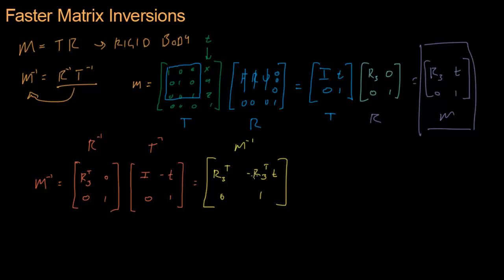So this is our M inverse. That's all there is, folks. We know what R3 is. It's this 3 by 3 matrix in the upper left of our original M matrix. So all we have to do is transpose that and then take that transpose, multiply it by the vector T, which is up here on the top right, and take it negative. That will be our new translation.